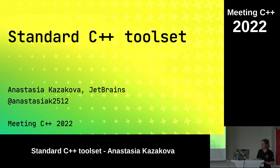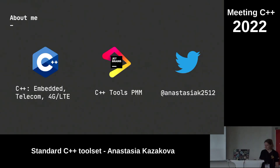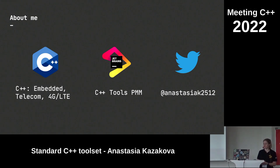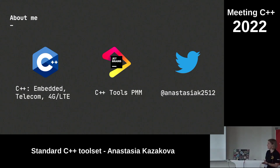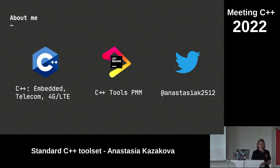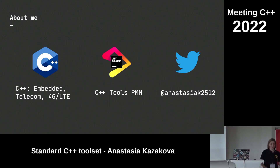For those who don't know me, my name is Anastasia Kazakova and I work for JetBrains. Before JetBrains, I spent eight years in C++ development for embedded systems — mostly telecom networking devices. We were doing the policy controller for 4G LTE networks. Then I moved to JetBrains. I'm working as a product marketing manager, but with my C++ background I try to help the team and do our best for C++ developers. You can find me on Twitter and I'm always ready to answer questions about tools.